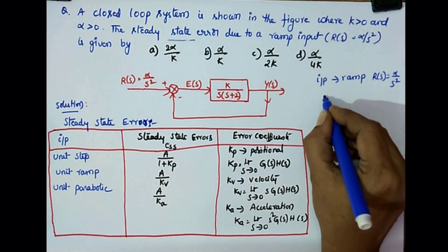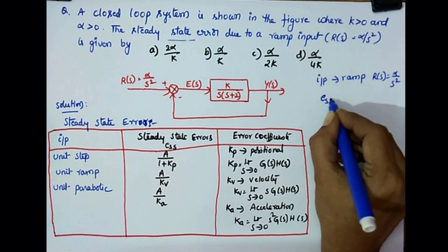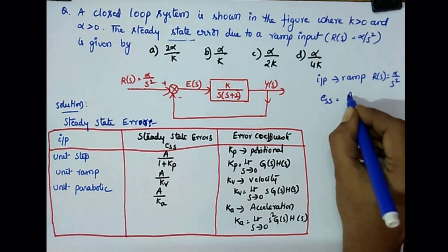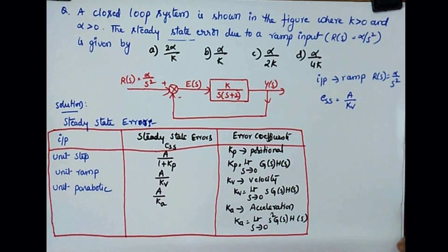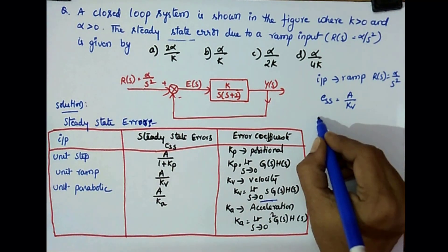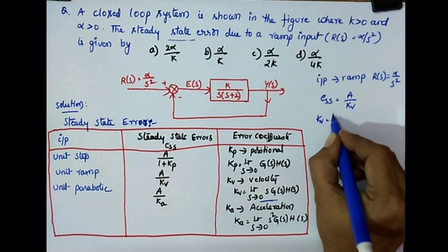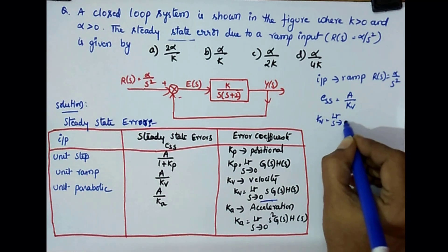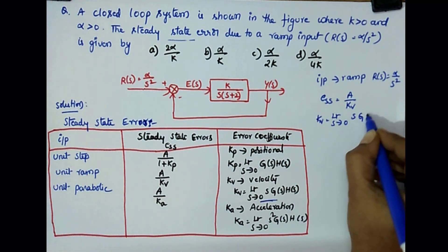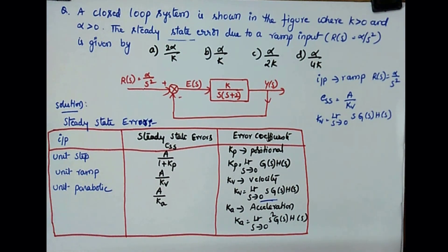So now ESS is A by Kv. Then what is Kv? Kv, see here, is this. And Kv is limit S tends to 0, S into G(s) into H(s).